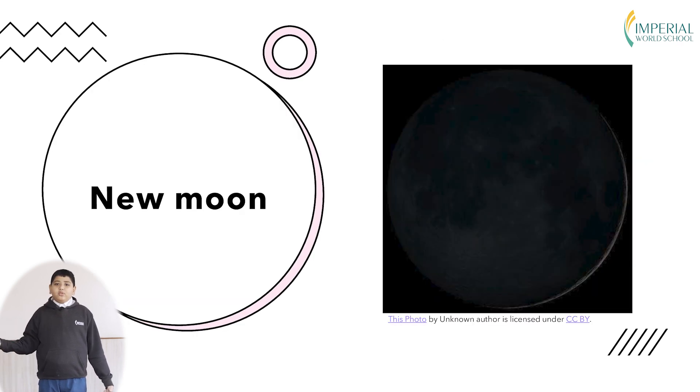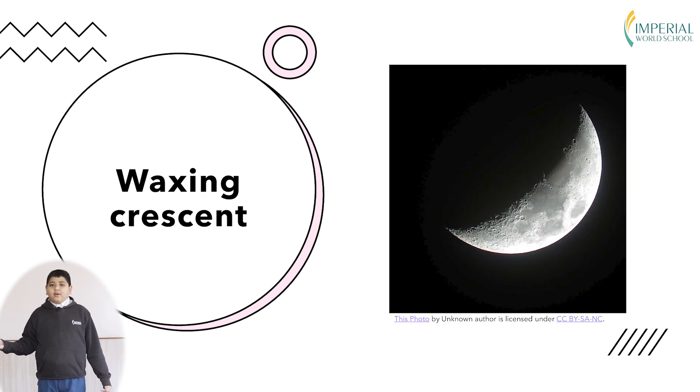So at first we have the new moon where we can't see the moon in the sky. Then we go to the waxing crescent where we can see a crescent sickle like shape of the moon.